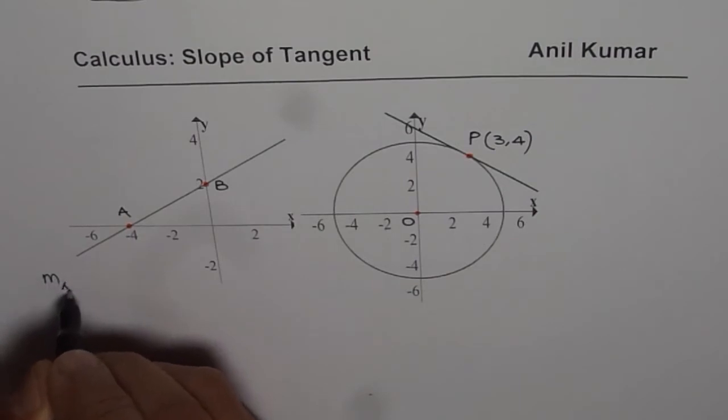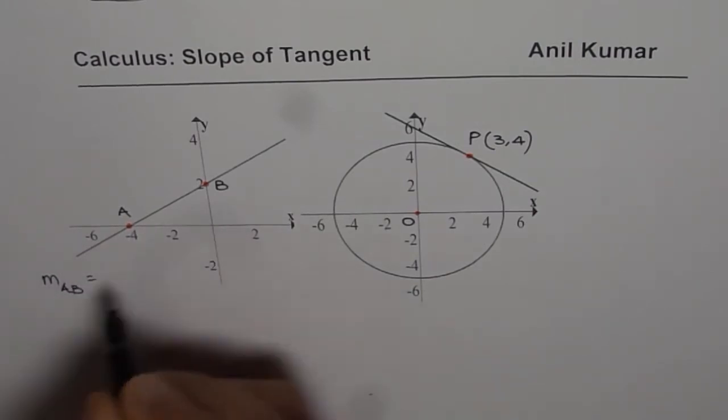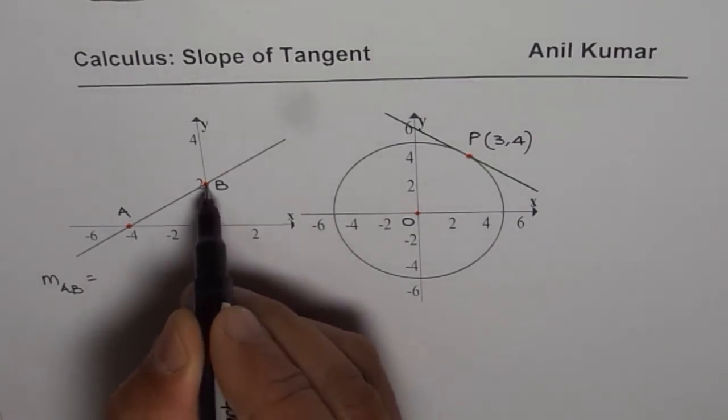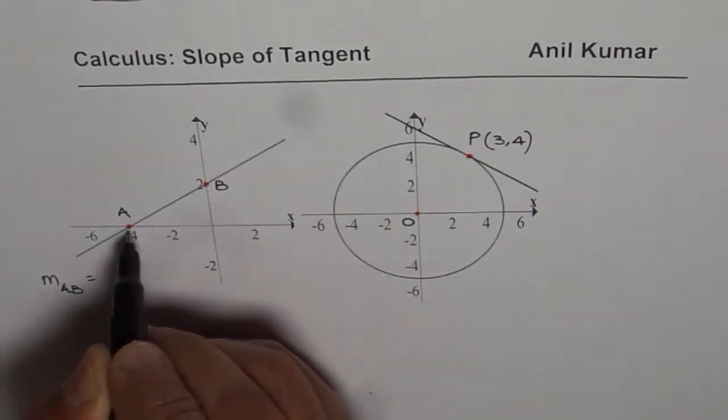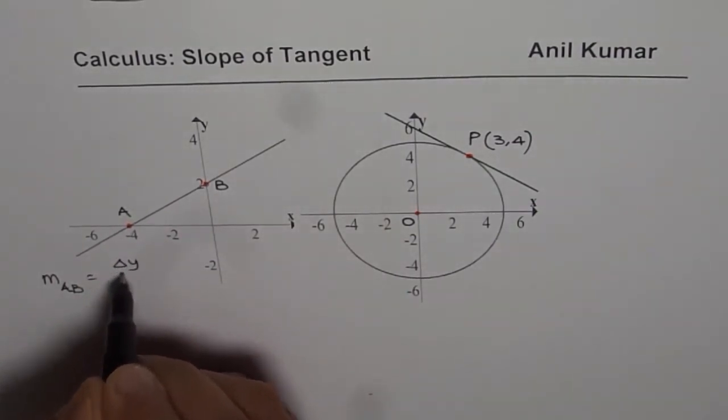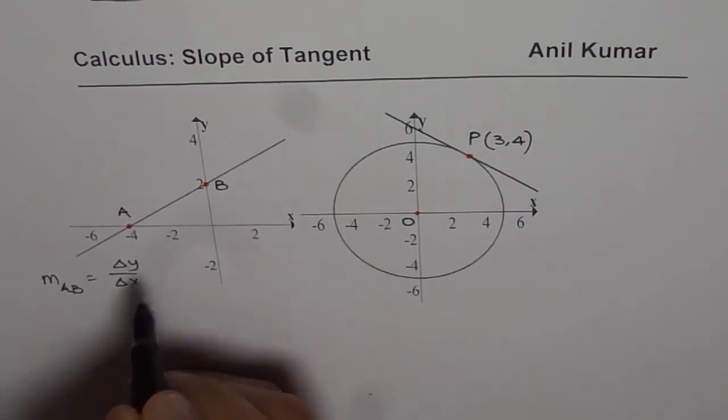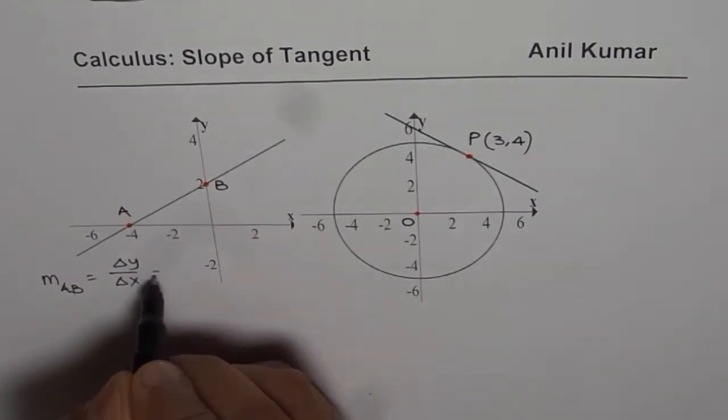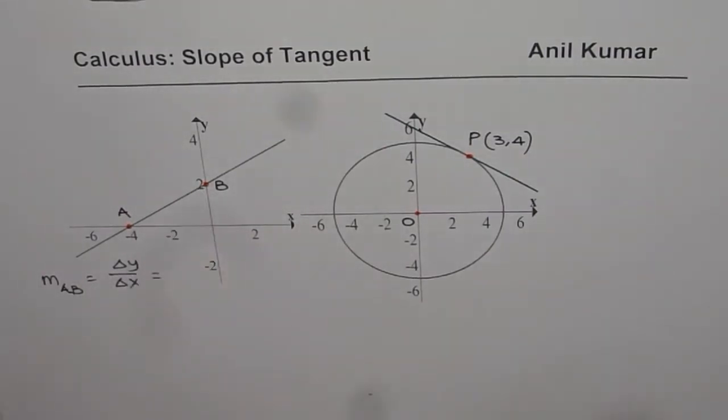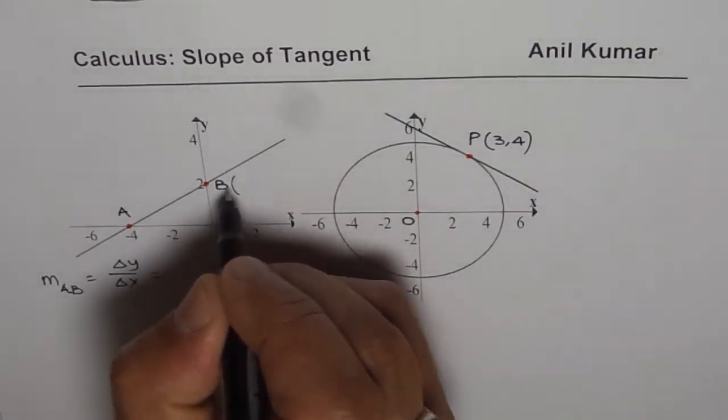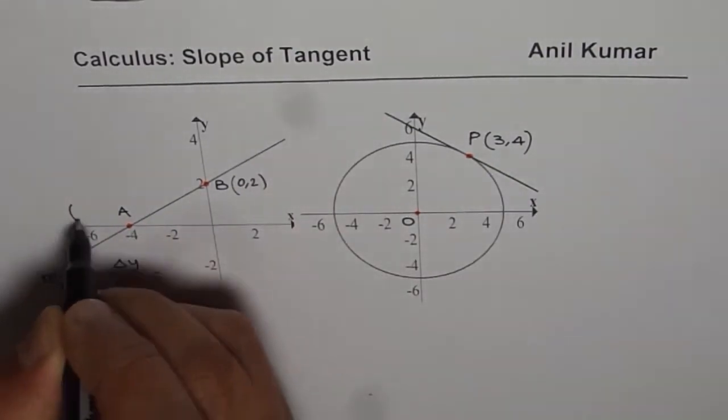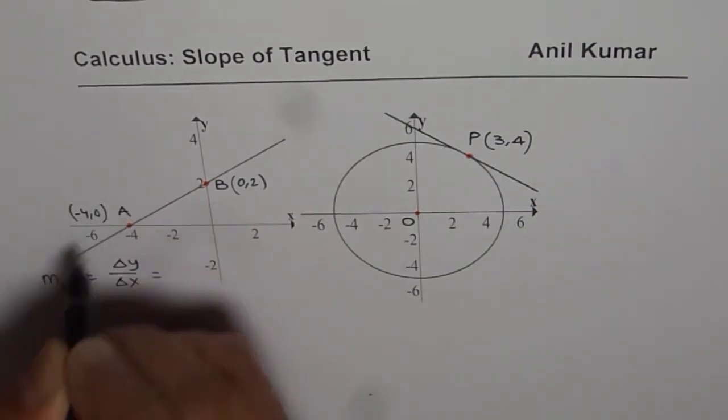Slope of line AB could be found by checking the difference between y and x. So delta y over delta x, this ratio gives us the slope. Now y2 minus y1, if I consider the point B, the coordinates are 0, 2 and for point A, the coordinates are minus 4, 0.